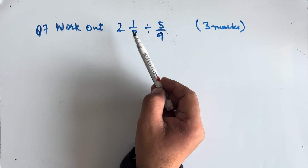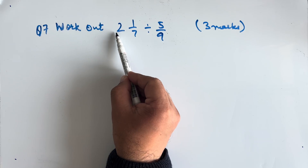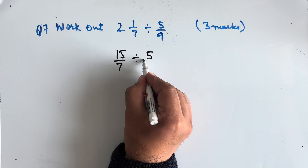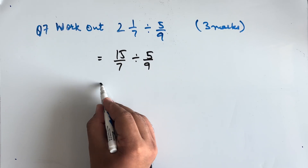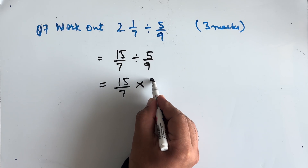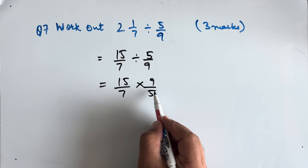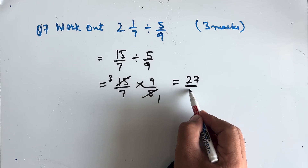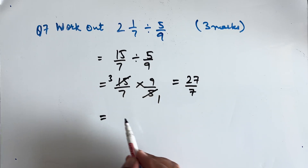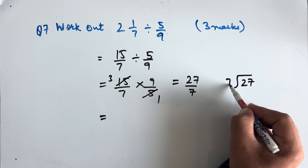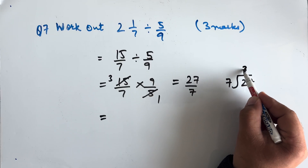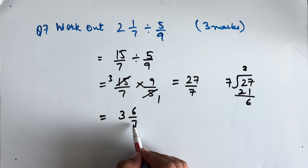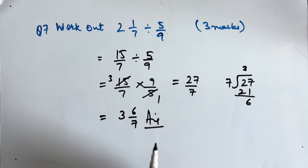Question 7: Work out 2 and 1/7 divided by 5/9. 2 and 1/7 becomes 15/7. We flip 5/9 to get 9/5 and multiply: 15/7 × 9/5. Cancelling 5s: 3 × 9/7 = 27/7. Dividing 27 by 7: 7 threes are 21, remainder 6, giving 3 and 6/7 as our final answer.